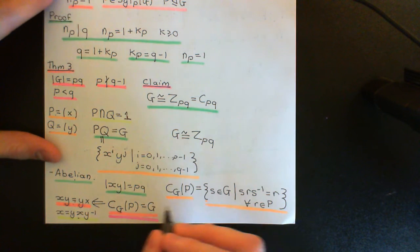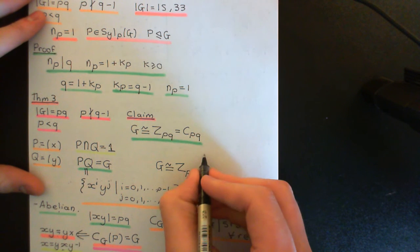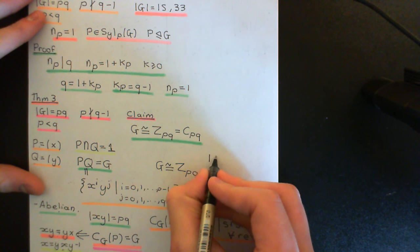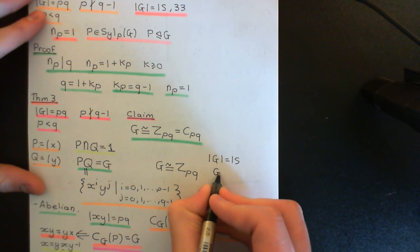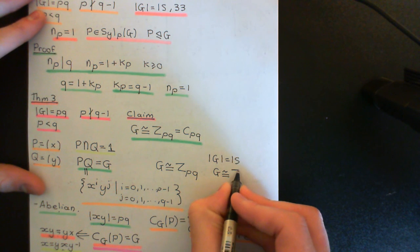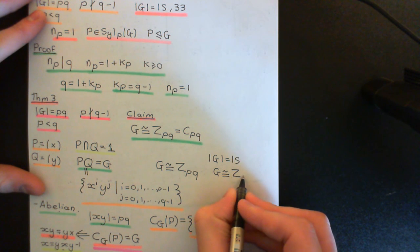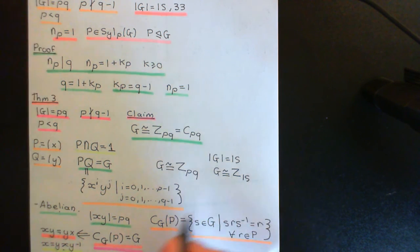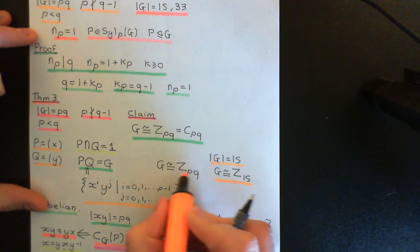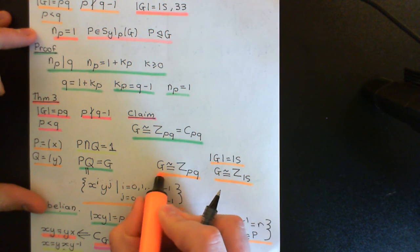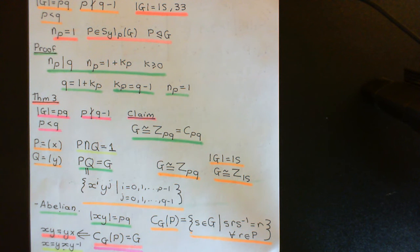Just to finish with a few examples: if we have a group of order 15, we can instantly say it's isomorphic to Z_15 — there's only one group up to isomorphism of order 15. The same is true for a group of order 33, and indeed for any group of order one prime times another prime where the smaller prime does not divide the larger prime minus one. And with that, we will end this discussion.